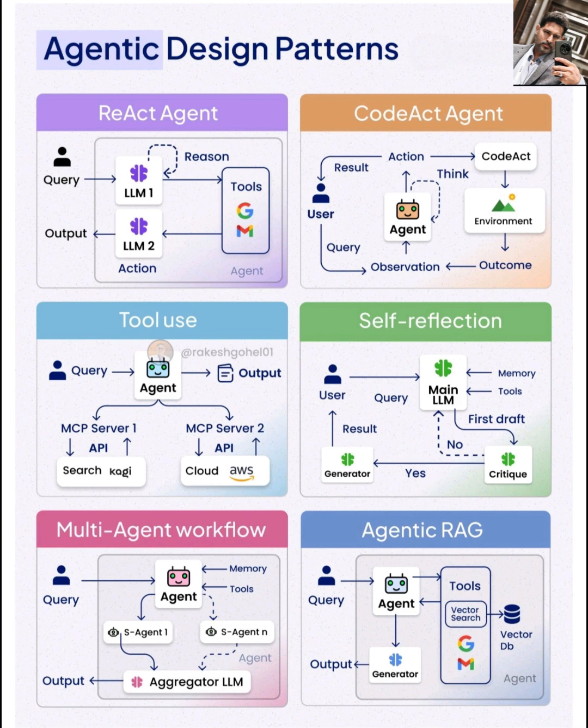The agent first thinks about the query using a language model, LLM1, generates a reason for its next step, and then uses tools based on that reasoning. Another language model, LLM2, then takes the output from the tools and formulates the final response. It's like an agent that thinks step by step before acting, making sure its actions are well informed by its reasoning.